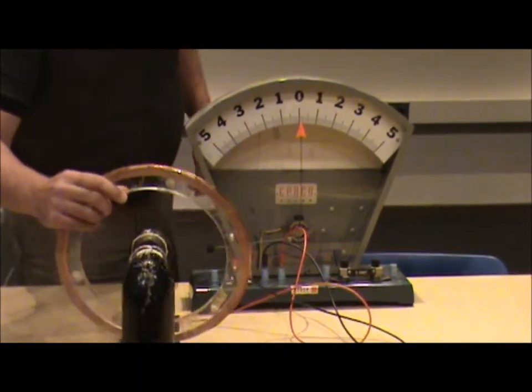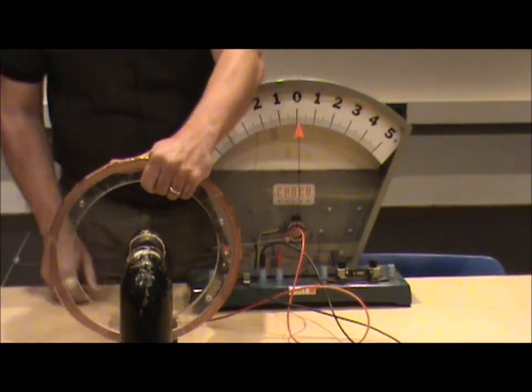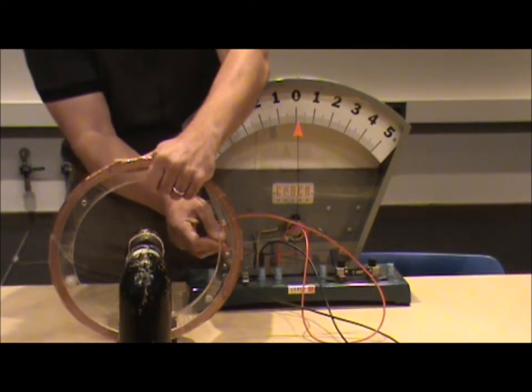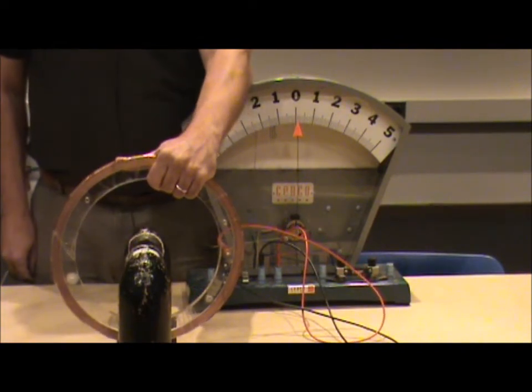So I've got my coil in the magnet, and now what I'm going to do is plug it in so that I can measure the voltage generated across that coil.